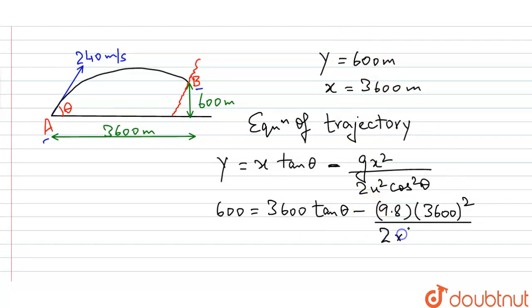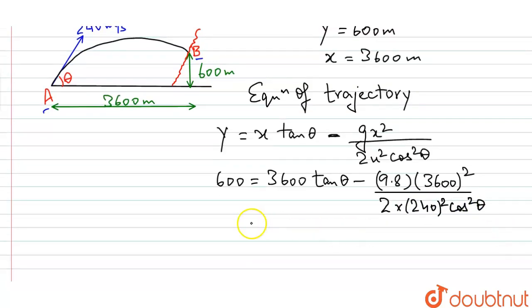U is 240 squared and cos squared theta. Here students, on solving, I get the quadratic form: 1104 tan squared theta minus 3600 tan theta plus 1704 equals 0.